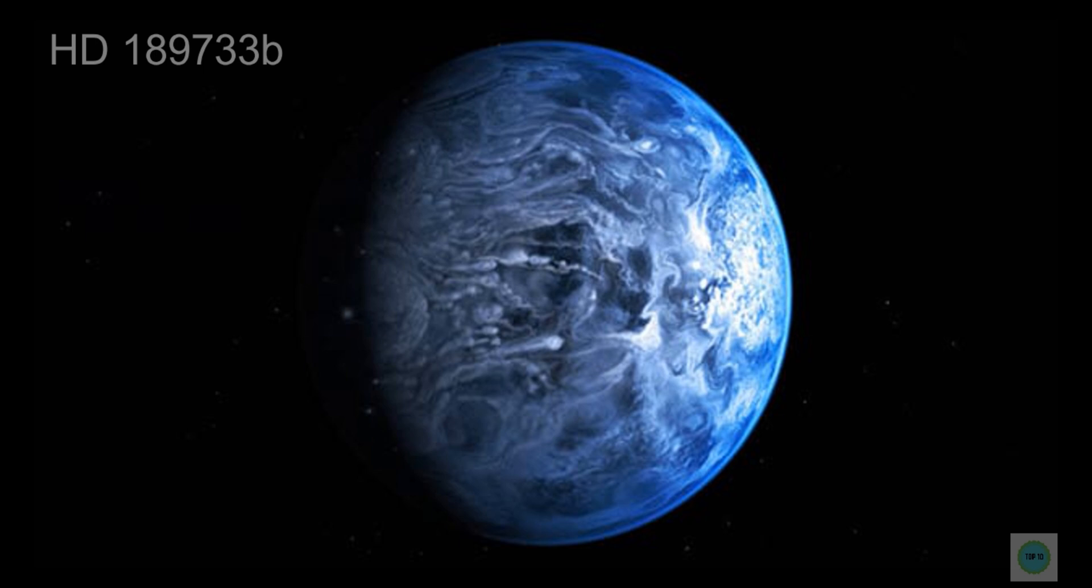Then there is the rain. The silicate-rich clouds of HD 189733b produce rain of liquid glass to fall from the skies. That rain doesn't fall straight down due to the super-fast winds. Instead, this strange precipitation falls sideways.